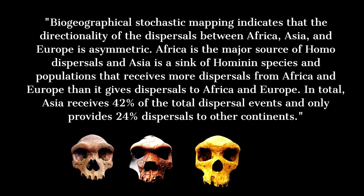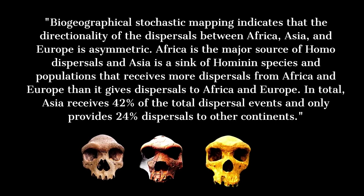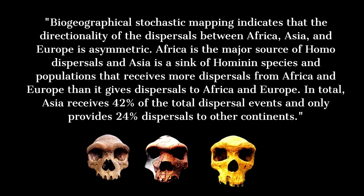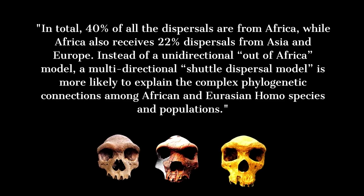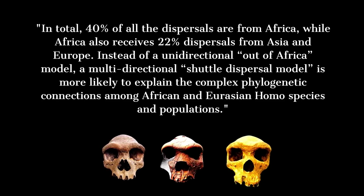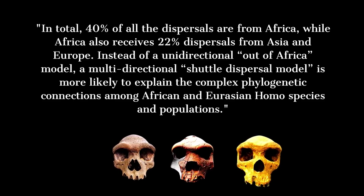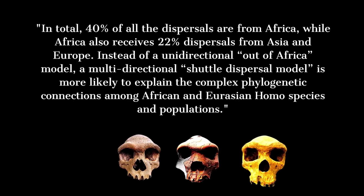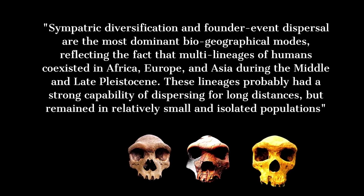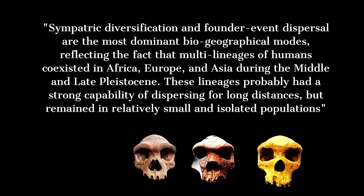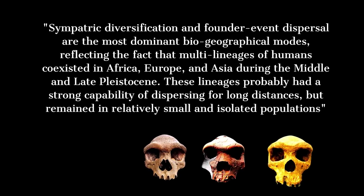In total, Asia receives 42% of the total dispersal events and only provides 24% of dispersals to other continents. Overall, 40% of all dispersals are from Africa, while Africa also receives 22% dispersals from Asia and Europe. Instead of a unidirectional out-of-Africa model, a multidirectional shuttle dispersal model is more likely to explain the complex phylogenetic connections among African and Eurasian homo species and populations. Sympatric diversification and founder event dispersal are the most dominant biogeographical modes, reflecting the fact that multi-lineages of humans coexisted in Africa, Europe, and Asia during the Middle and Late Pleistocene.